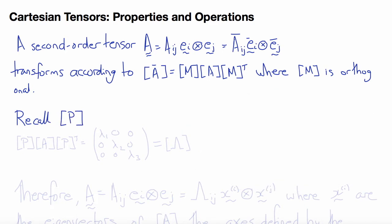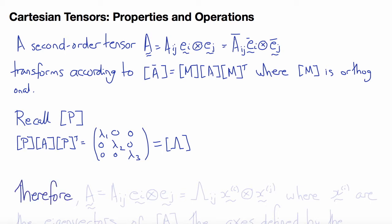Let's recall the spectral matrix P, which we constructed from the eigenvectors, and found that the transformation P A P transpose takes the matrix A and diagonalizes it, where the eigenvalues lambda 1, lambda 2, lambda 3 are the diagonals of the matrix. The components of P are the components of the three eigenvectors. In other words, P is a special case of M that transforms the components of the symmetric tensor A so that the components are diagonal, and the coordinate frame in which this is the case defines the principal axes, defined by the eigenvectors x_i.